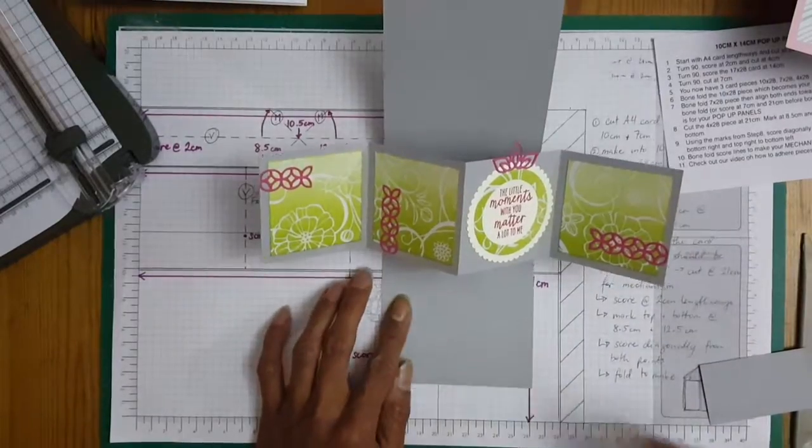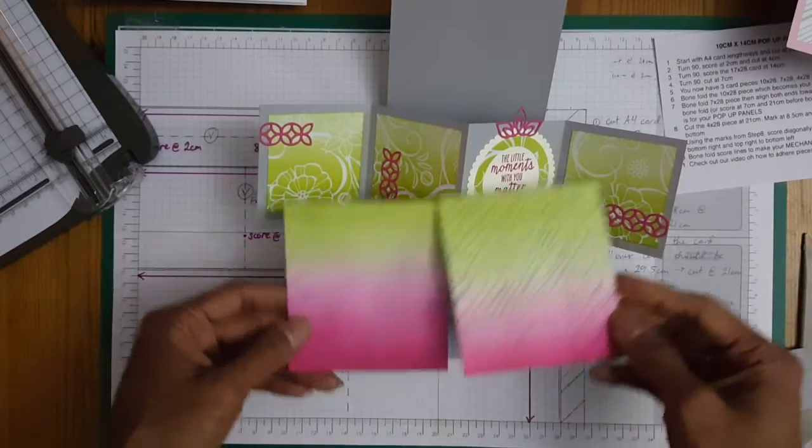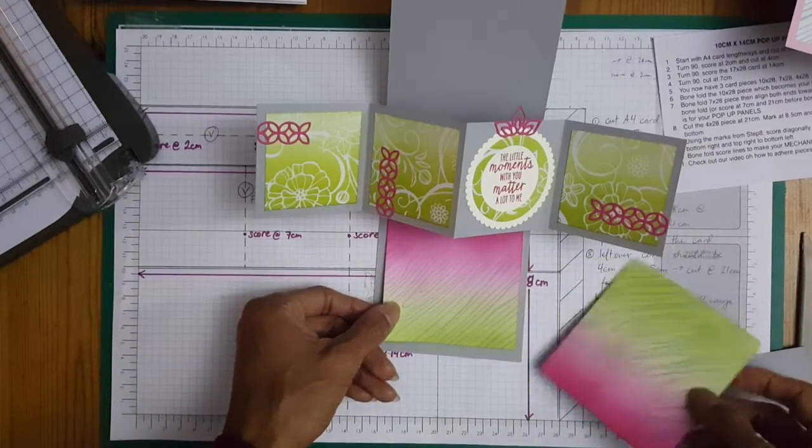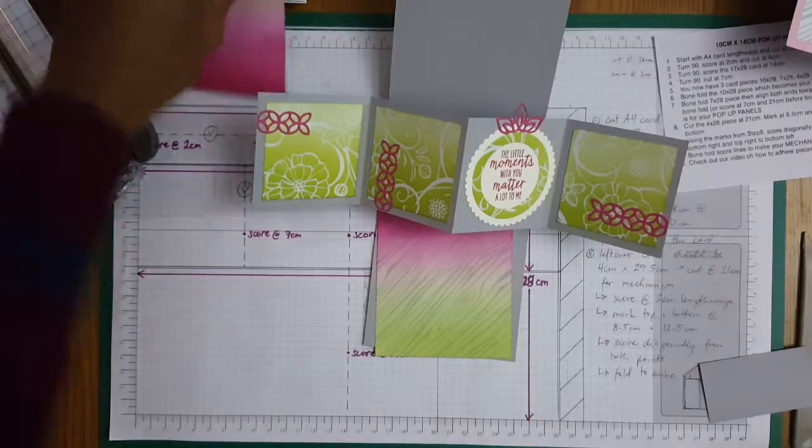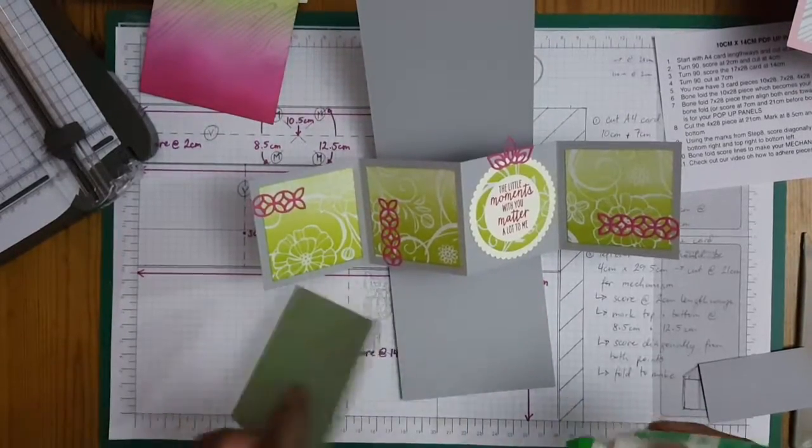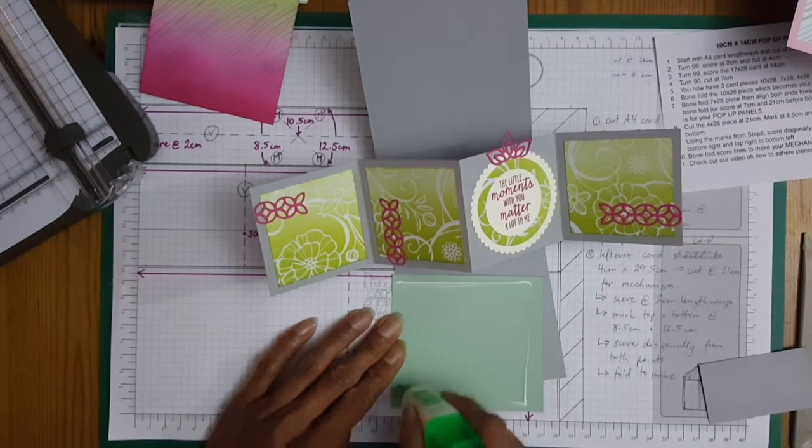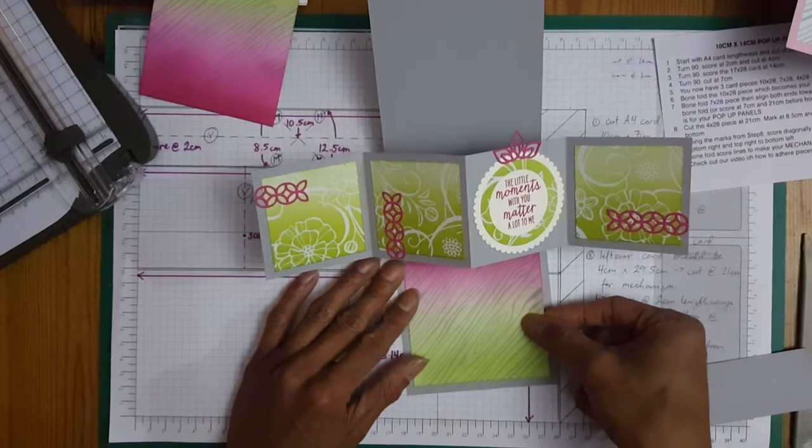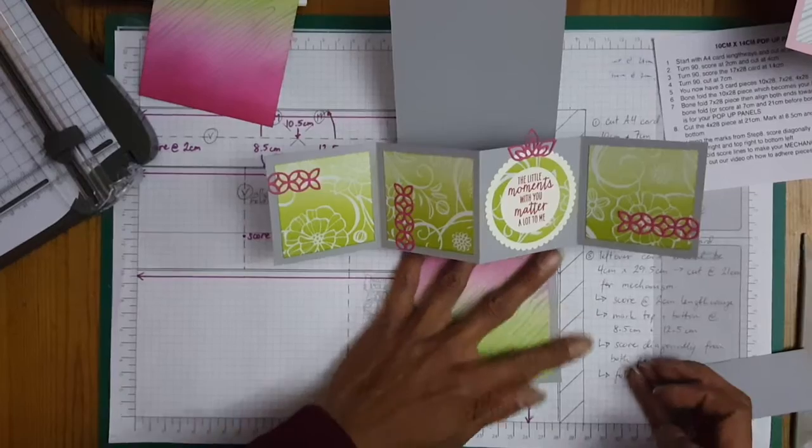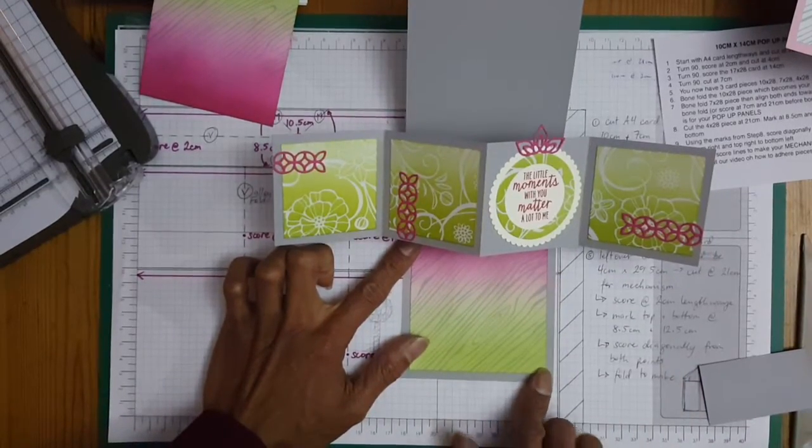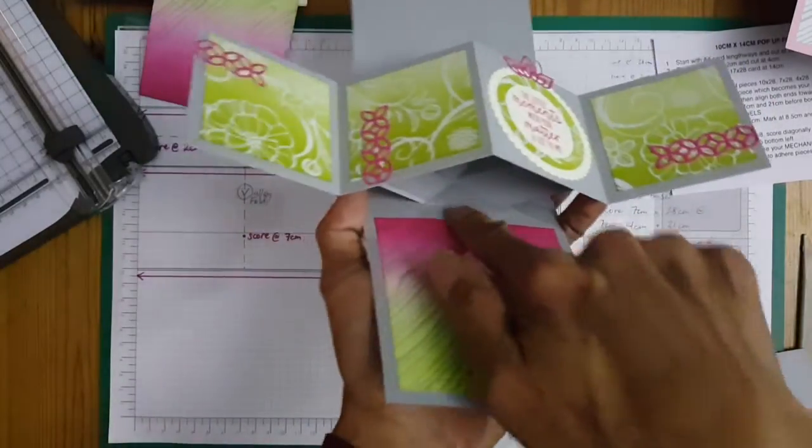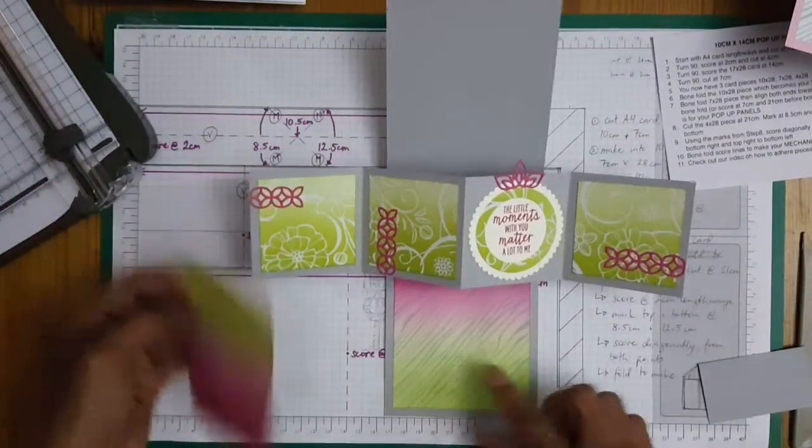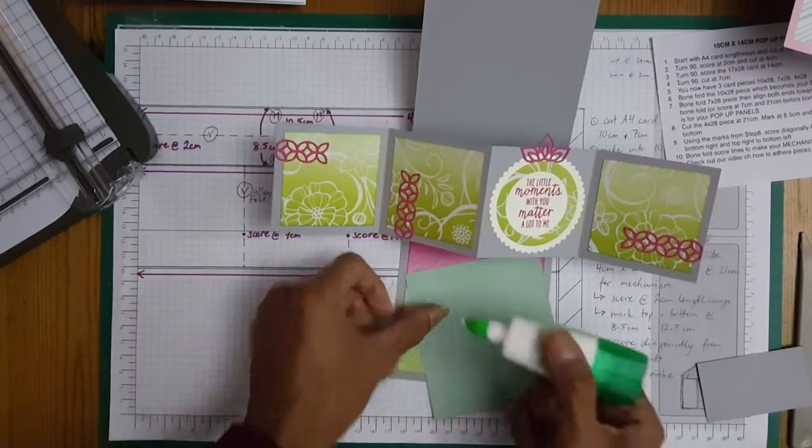So just to decorate the top and the bottom, I have used again the old DSP, but this time I've brayered in Melon Mambo and Pumpkin Pie, just to create a different look. Maybe that way. We'll do it that way. And just eyeball that. So with the DSP the measurement is 9 by 10. I didn't go all the way in because you can't really see it, so you can save on your DSP. But you could always go up to like 10 and a half if you want to, so it's not touching the actual mechanism.